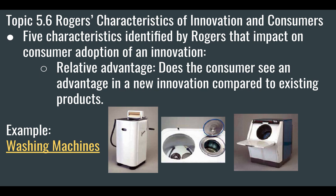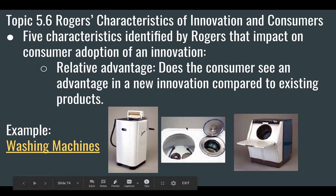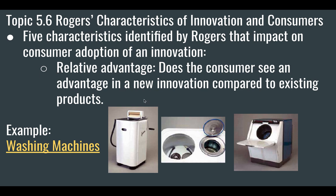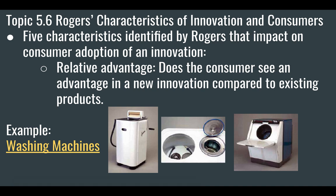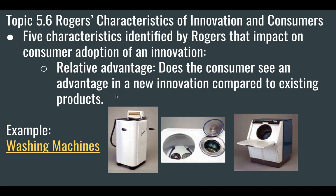These are called wringers. A little later — around the 1960s — you have the same washing machine, but now with a spin dryer. You'd take your clothes from the wash bin, put them into the spin dryer, turn on the machine, and it would spin and dry them for you. The relative advantage is you no longer have to crank a wringer to squeeze out excess water. Then in the 1970s, the washer and spinner were combined in the same machine.